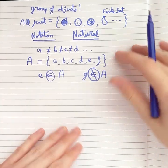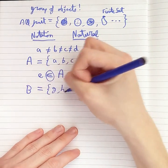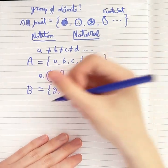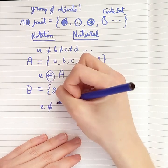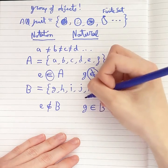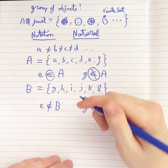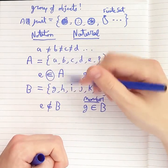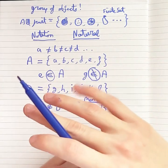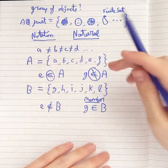Now let's start dealing with multiple sets. We make a new set called B, and B contains G, H, I, J, K, and L. We can say that E is not in B, but G is a member of B. What we've created here are two sets which are completely different — there's not one item which is in both sets.